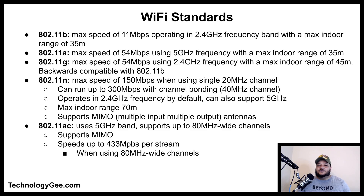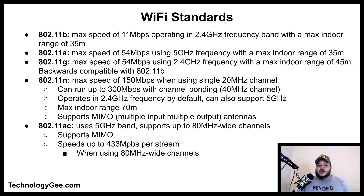The 802.11ac network uses only the 5 GHz band and supports up to 80 MHz wide channels, compared to 20 MHz for 802.11b and g, and 40 MHz for 802.11n with channel bonding. It also supports multi-user MIMO, and the speed of 802.11ac is up to 433 megabits per stream when using the 80 MHz wide channels.